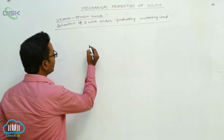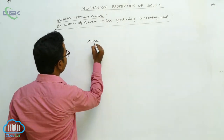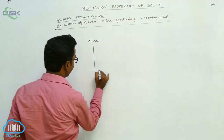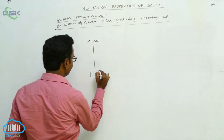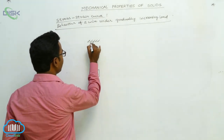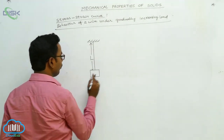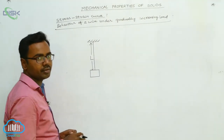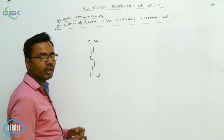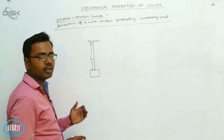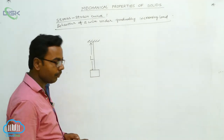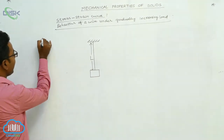First of all, let us take a wire which is suspended from a rigid support. The wire has original length L, to which we attach a load. Now we gradually increase the load in equal steps. Every time we find the stress applied and the strain produced — we calculate stress and strain.